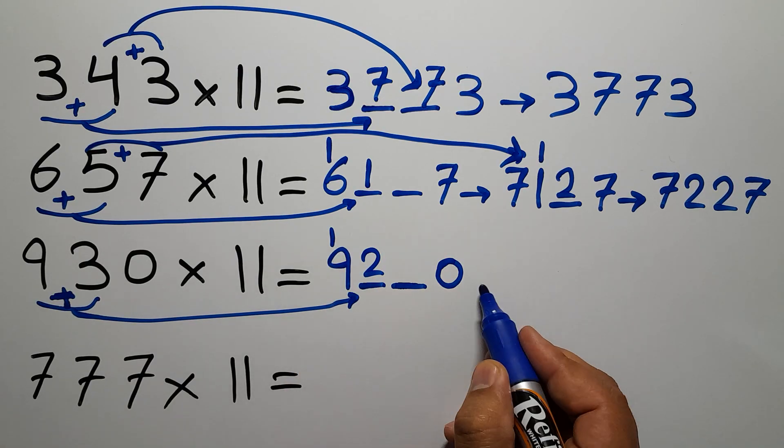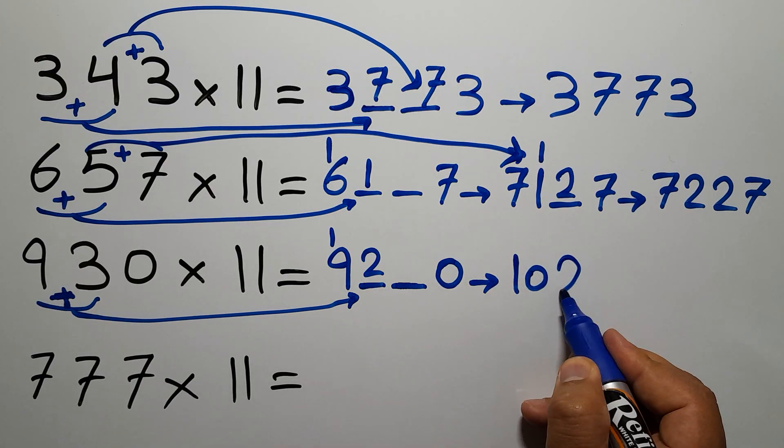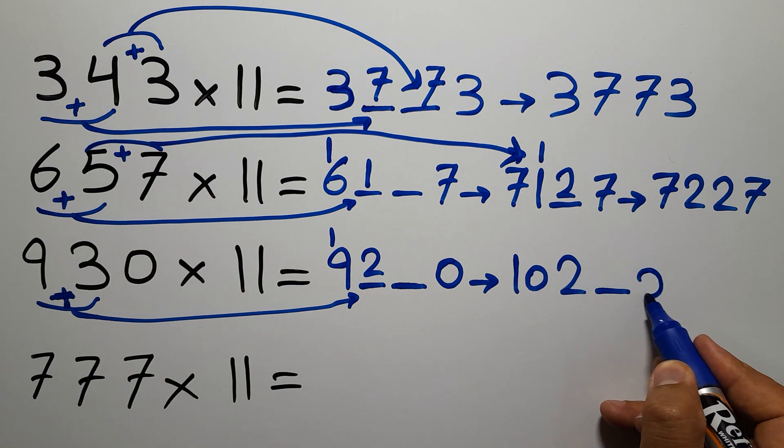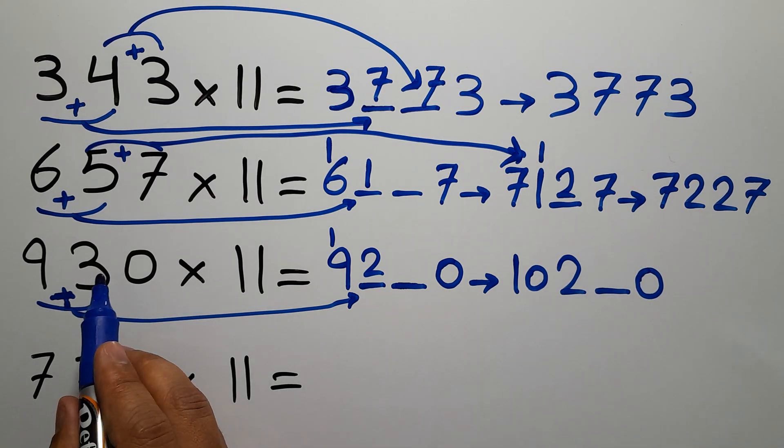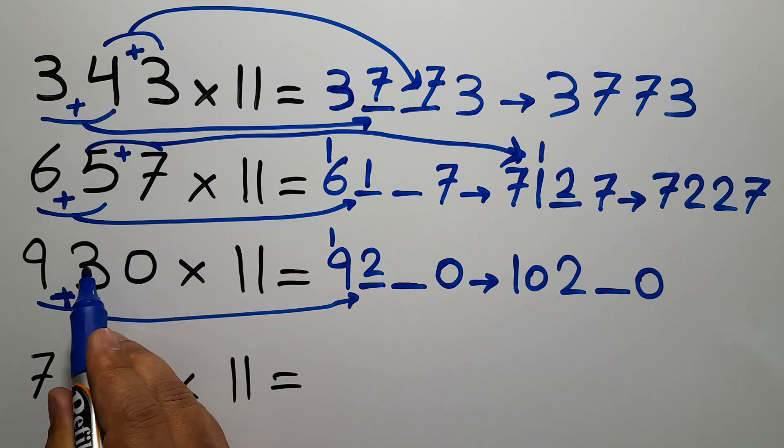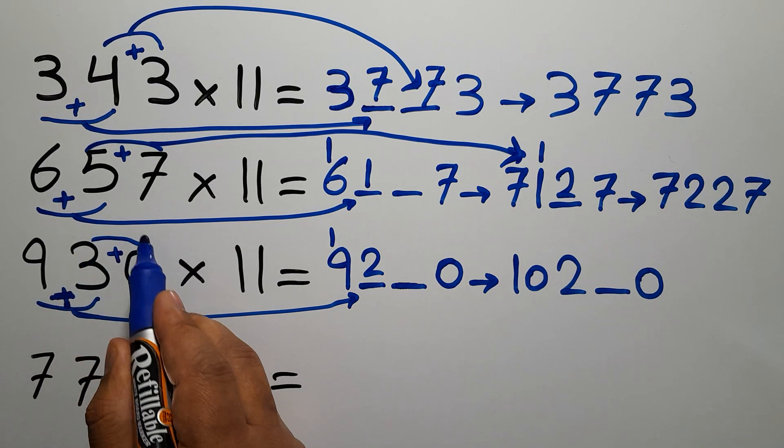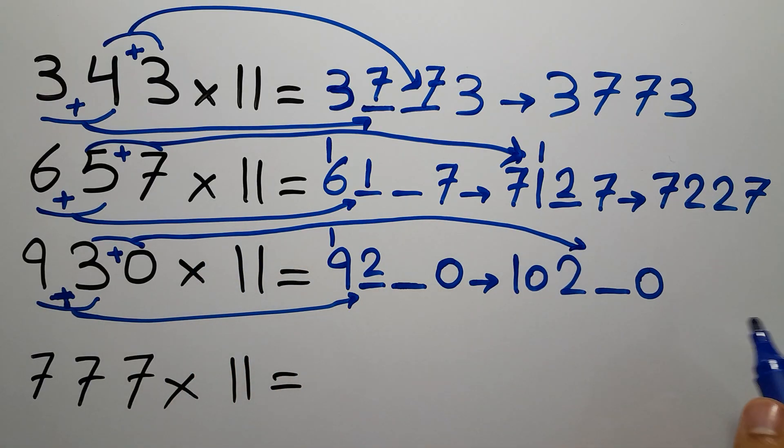Now to fill this blank, we add the last two digits, 3 and 0, which equals 3, so we place 3 here.